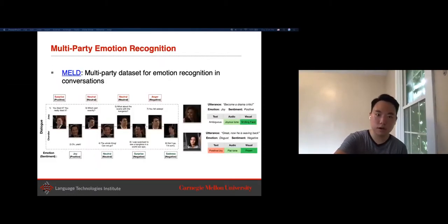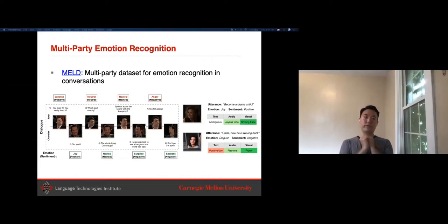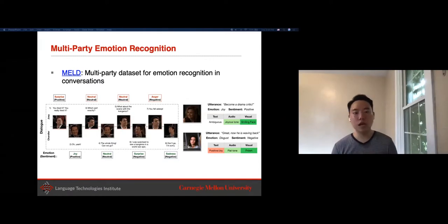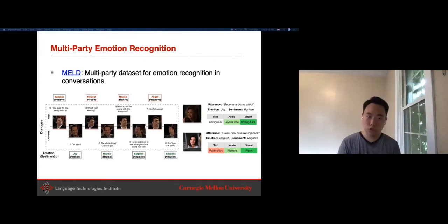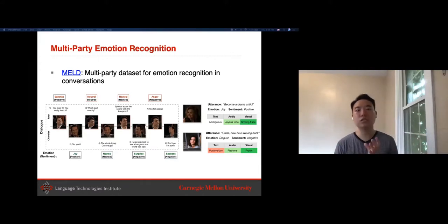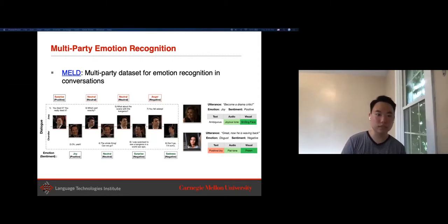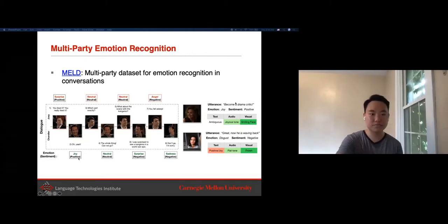People have also extended research from single-person to multi-party emotion recognition. The MELD dataset is collected from the Friends TV show, annotating the emotions of each character separately. The goal is not just to look at the overall emotions of the entire conversation, but to maintain models of how each individual is progressing in terms of their emotions—for instance, one character consistently showing joy and surprise while another shows more anger.